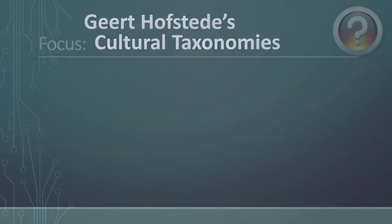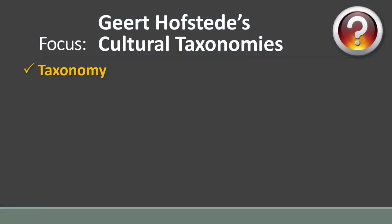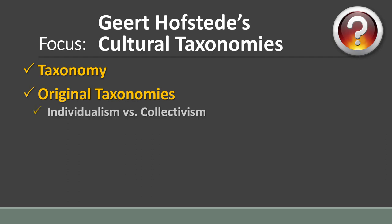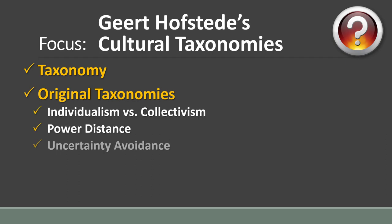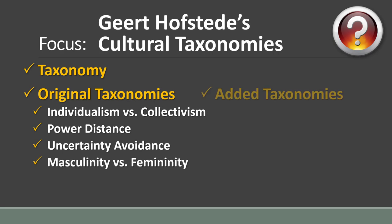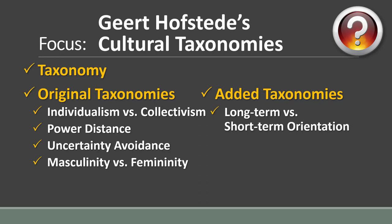This video will describe what a taxonomy is, before briefly discussing the four original taxonomies of individualism and collectivism, power distance, uncertainty avoidance, and masculinity versus femininity. Then we'll discuss the two additional ones of long-term versus short-term orientation and indulgence versus restraint.